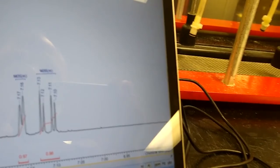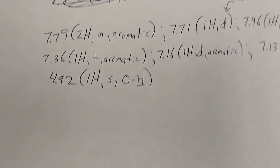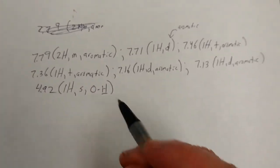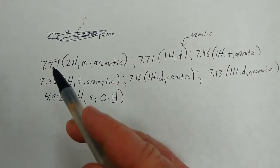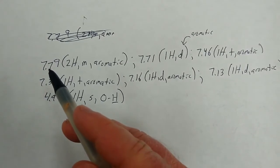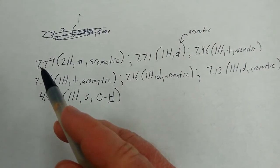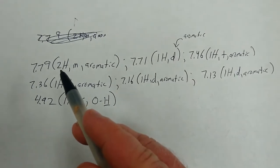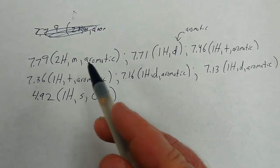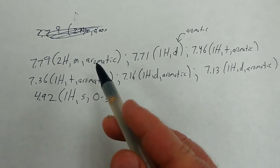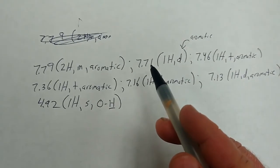The way you would actually write out that spectrum would be where your first signal on the left starts. So seven point seven nine, and that's two protons and you can put in for multiple just saying it's aromatic proton. Onto the next one right here: one proton, doublet, aromatic.